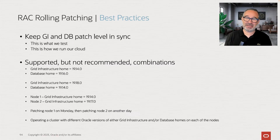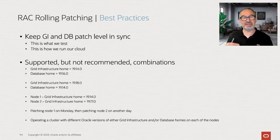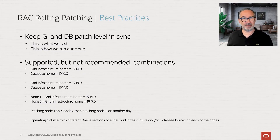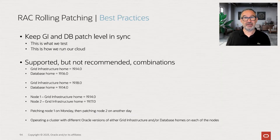Now something which is really important and sometimes also leads to misunderstanding. In the old releases, we told you the grid infrastructure has to be always the highest version in the entire cluster. Now with the new release numbering scheme since 18c, the question came up so many times: can I combine like 19.14 grid infrastructure and 19.16 database home? Yes, you can. The MOS note is pretty clear on that — patch level can be different.